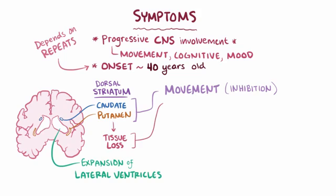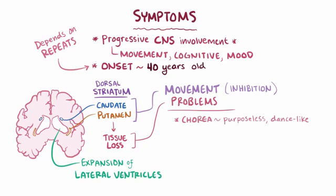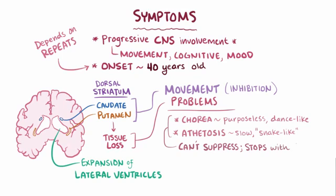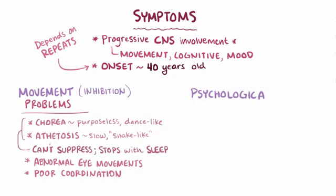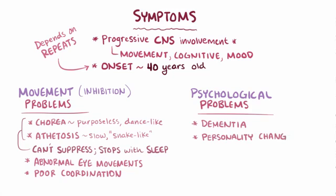Neuronal death in the basal ganglia causes movement problems like chorea — purposeless, dance-like jerky movements — and athetosis, which are slower, writhing, snake-like movements mainly affecting the hands. These involuntary movements can't be consciously suppressed and stop only with sleep. Other motor problems include abnormal eye movements and poor coordination. Loss of tissue in these regions can also lead to psychological problems such as dementia, personality changes, and depression.